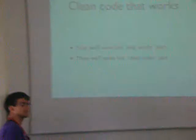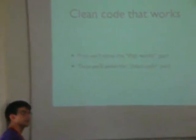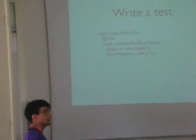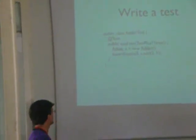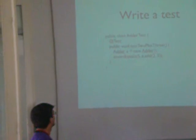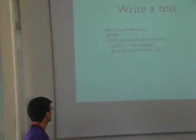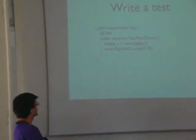The first thing is obviously to write code that works. The first objective is to solve the problem. And then we can arrange our code better. For example, here we start by writing a test. The first thing we do is write a test.